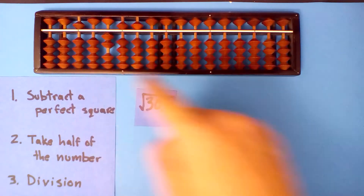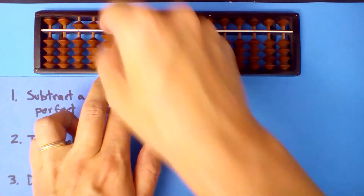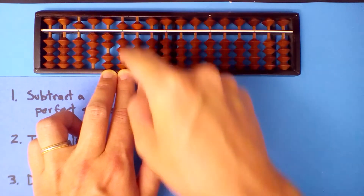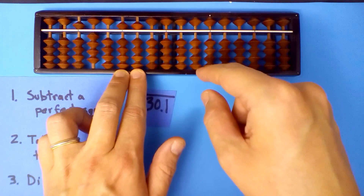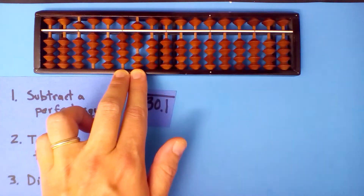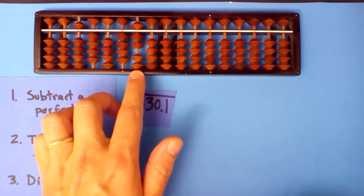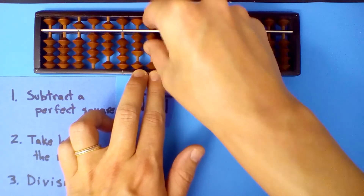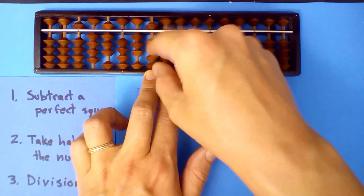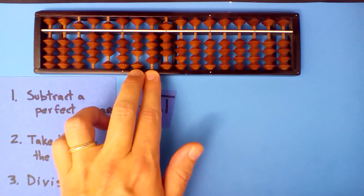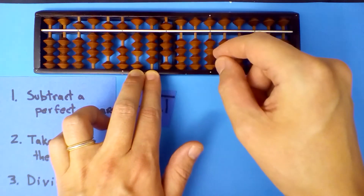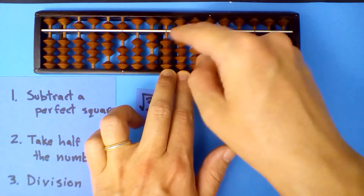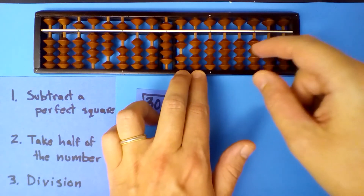Divide this number into this one. 5 goes into 25 five times, but 5.5 does not go in 5 times, so 5 is too much — use 4. 4 times 5 is 20, 4 times itself — 5.4 into 47, 8 times. 8 times 5, 8 times 4, 8 times itself is 64 — we'll subtract 32. 5.4 into 34, 6 times. 6 times 5 is 30, 6 times 4, 6 times 8, 6 times itself is 36 — we subtract 18.